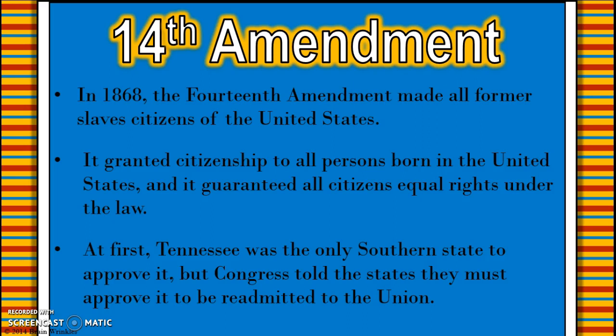Johnson's plan did have a few other requirements that were a little bit more harsh than Lincoln's, but overall he still had the same mindset of let's get this done and get the states back together. In 1868, the 14th Amendment was passed, making all former slaves citizens of the United States, granting citizenship to all persons born in the United States, and guaranteeing equal rights under the law. Tennessee was the only state to initially approve it, but Congress told the states they must approve it to be readmitted to the Union. The 14th Amendment was passed in response to the black codes that many southern states, including Georgia, had created.